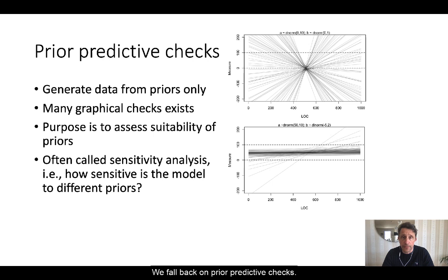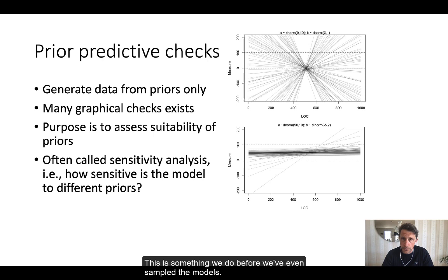We fall back on prior predictive checks. Later, we will do posterior predictive checks. But let's focus now on prior predictive checks. This is something we do before we have even sampled the models, and we do it to see what our priors imply on the outcome space. Sometimes this is also called sensitivity analysis.